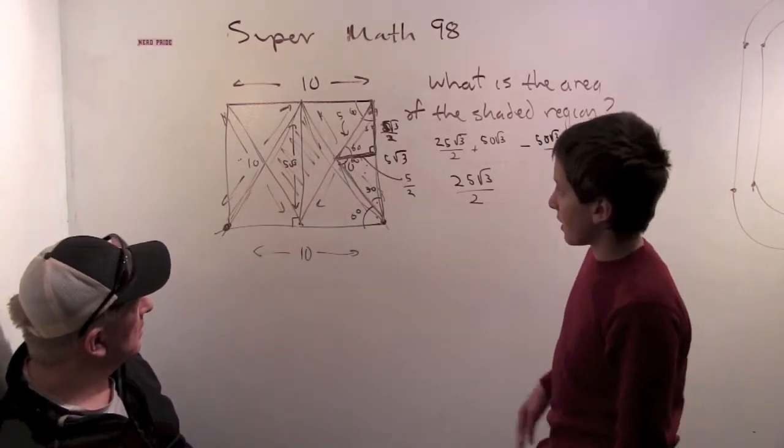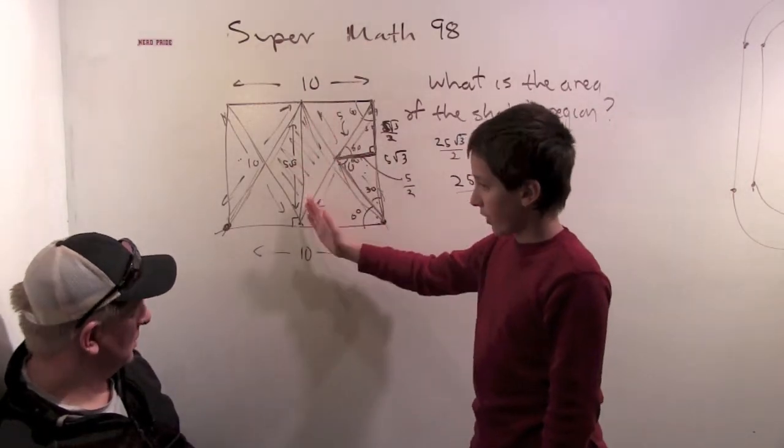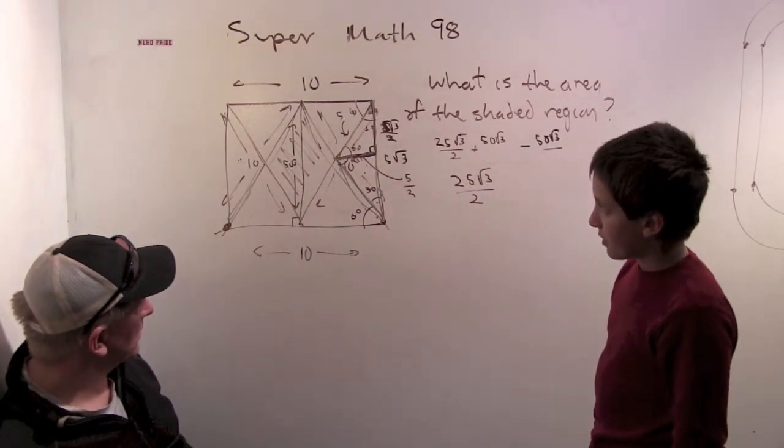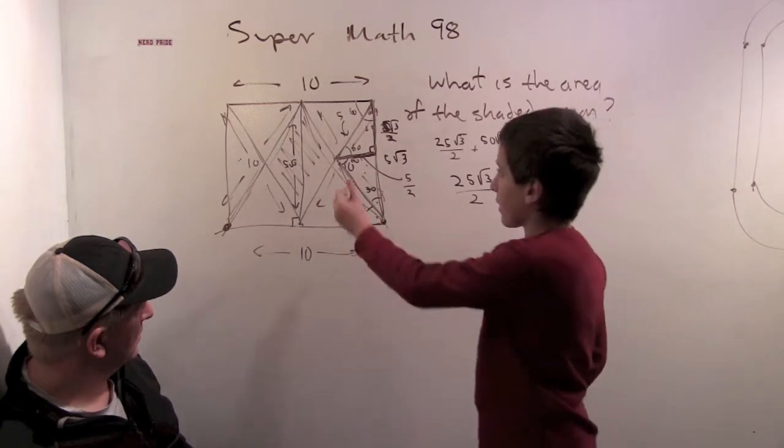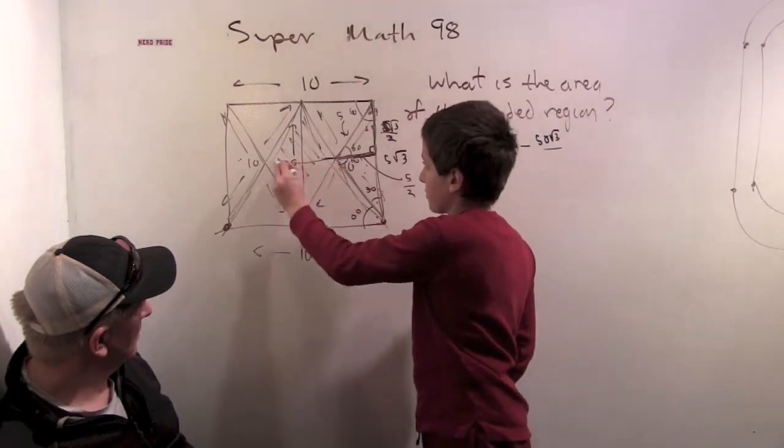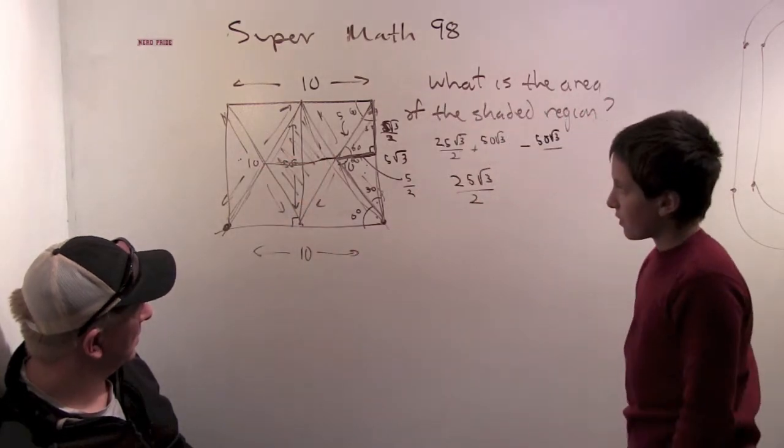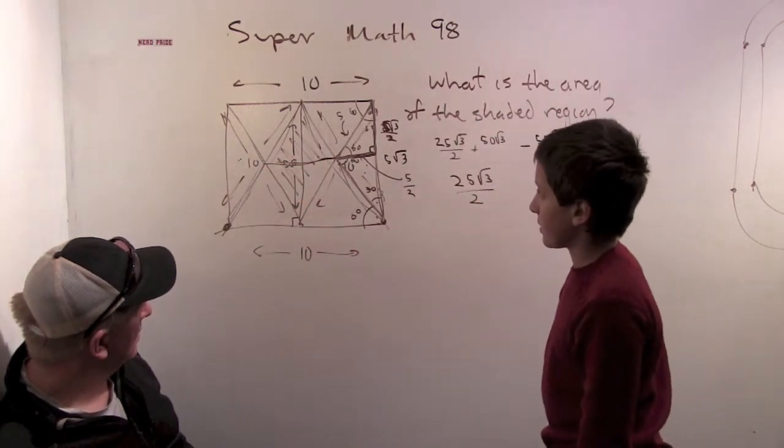Well, the first thing I did was find the height of the equilateral triangle, which was pretty easy. Then I was planning on doing the diagonals, the 5 root 3 times the diagonal. But I came across another solution.